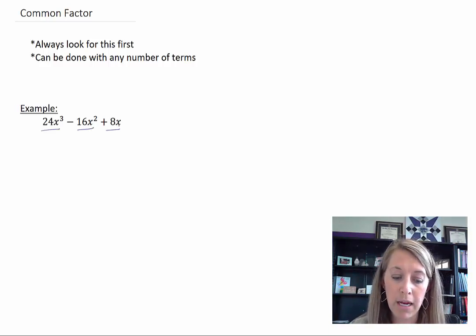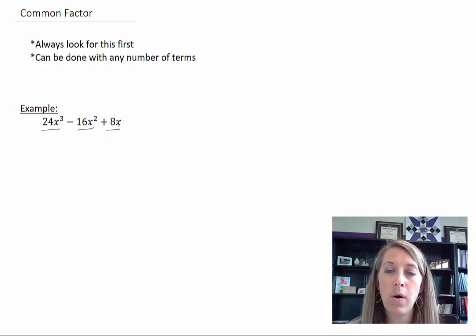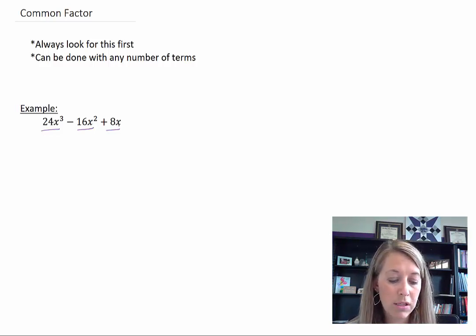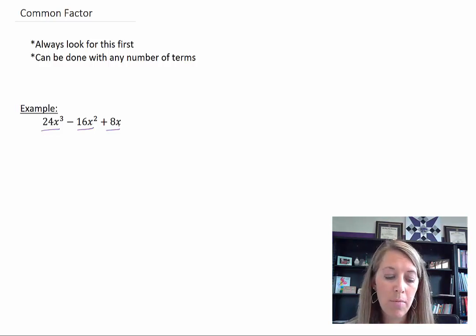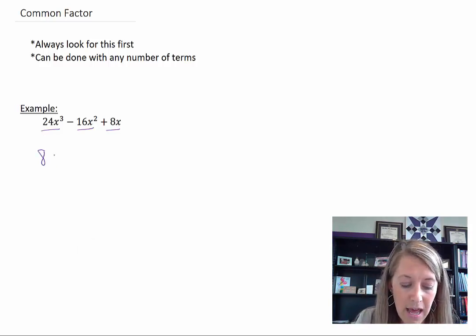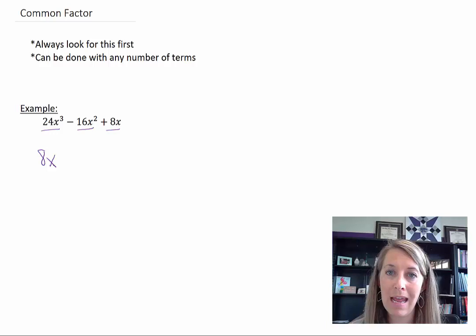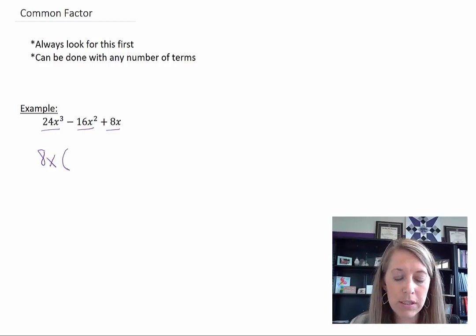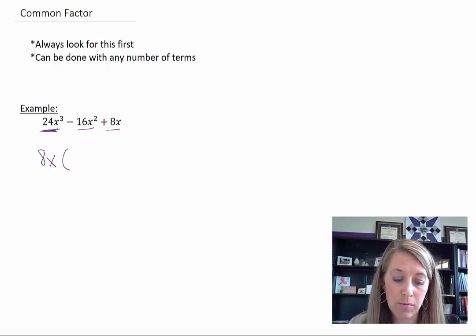The terms are the pieces separated by the plus or minus signs, so you can see these three terms here. We want to see what is in common between all three of these terms. They all have a factor of eight in common, and they all have a variable of x. So our common factor in this one is 8x. We're going to factor out 8x and then see what we have left — you basically take each individual term and divide it by what you factored out.